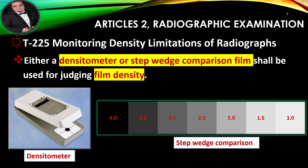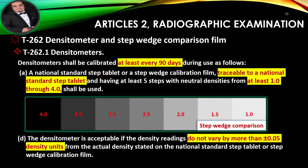Monitoring Density Limitations of Radiographs: Either a densitometer or step wedge comparison film shall be used for judging film density. Densitometers shall be calibrated at least every 90 days during use, using a national standard step tablet or a step wedge calibration film traceable to a national standard step tablet, having at least 5 steps with neutral densities from at least 1.0 through 4.0. The densitometer is acceptable if the density readings do not vary by more than plus or minus 0.05 density units from the actual density stated on the national standard step tablet or step wedge calibration film.